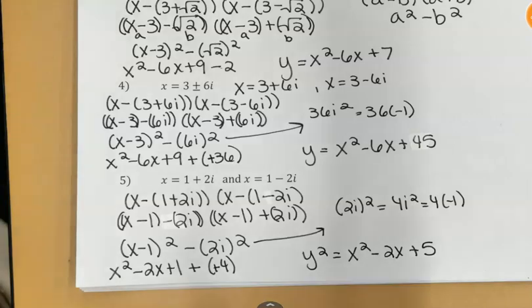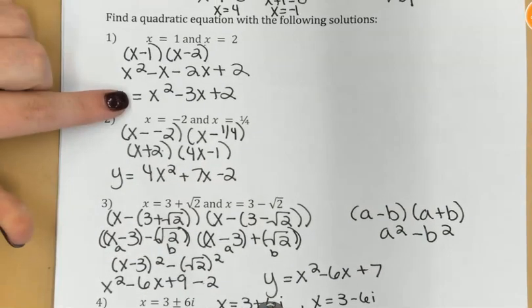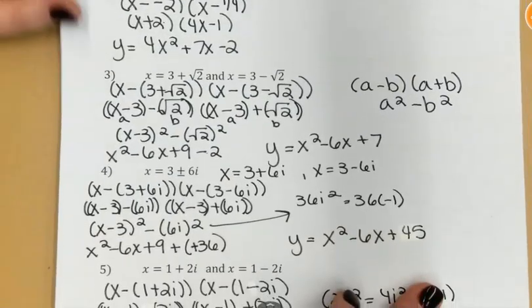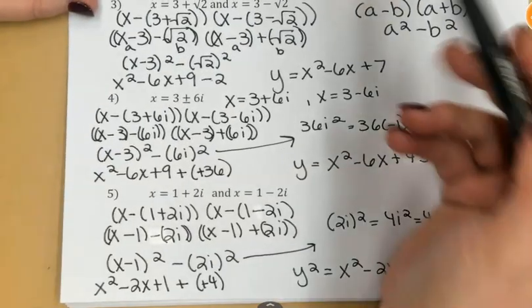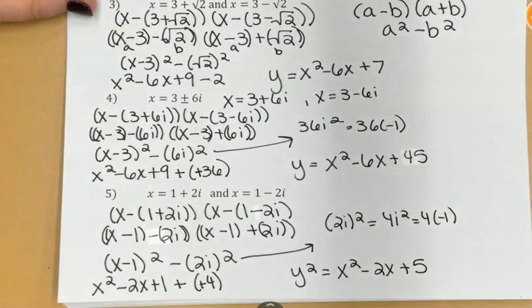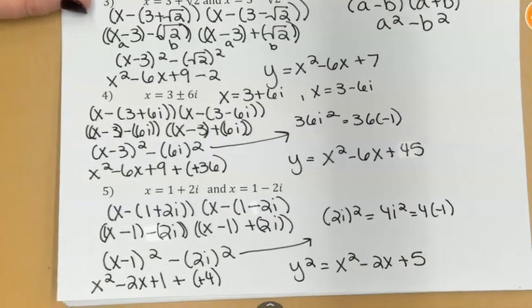So obviously, these are easier to do when you have rational answers, real numbers. It's a little bit trickier when you have irrational numbers like imperfect squares and imaginary solutions. But just following these steps every time will set you up for when we do this with higher degree polynomials, not just quadratics.